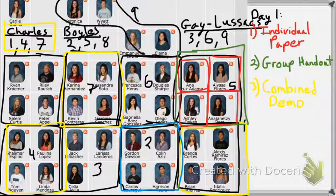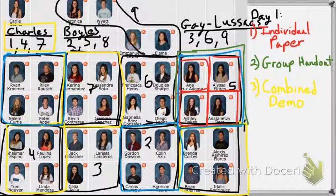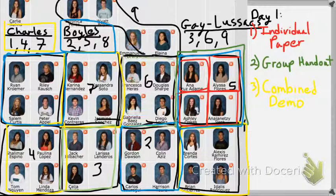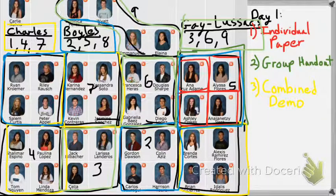That also means that Family two, Family five, and Family eight will work together to create a demonstration that will show Boyle's Law. And lastly, three, six, and nine will work together to create a demonstration that will show Gay-Lussac's Law.